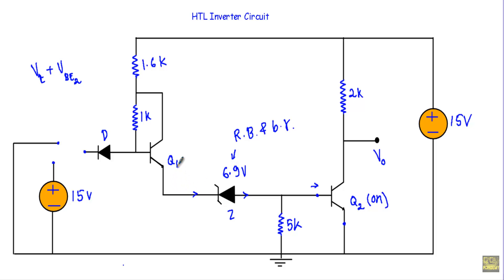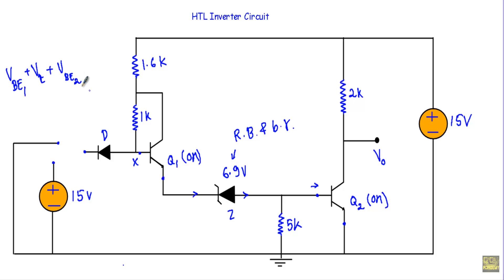The Zener current will be the emitter current of transistor Q1. We get the emitter current of transistor Q1 when its base-to-emitter junction is in forward bias — that is, when transistor Q1 is in the on state. Therefore, the voltage at terminal X will be equal to the sum of VBE1 plus VZ plus VBE2, so Vx = VBE1 + VZ + VBE2.